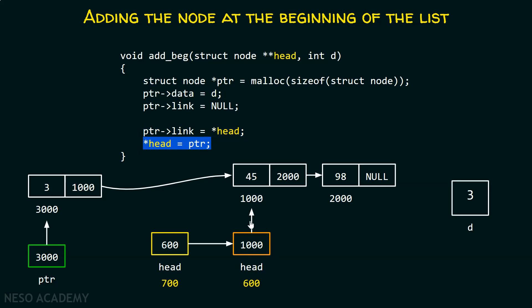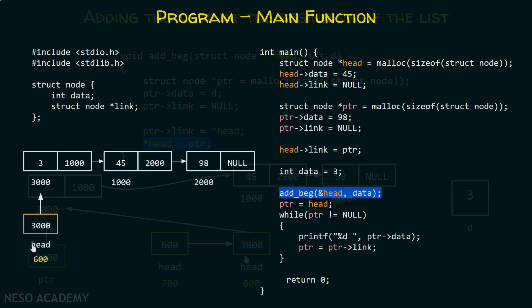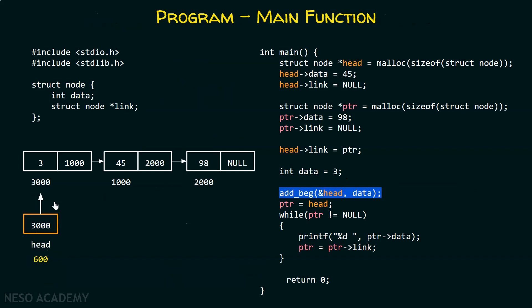After this, we will update this head pointer by putting star in front of head. We know that head is local to this function and contains address 600. We get inside that address and access address 1000. So here we will update this particular pointer by ptr — that is 3000 — so this will get updated to 3000. This is the process we have to follow. The head of the main function will get updated, and not the head of the add_back function. That is the head of the main function will get updated.